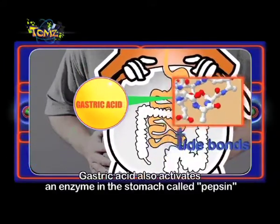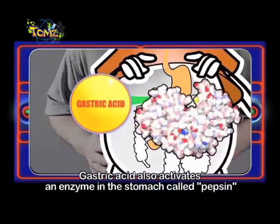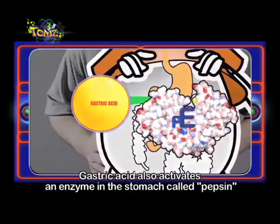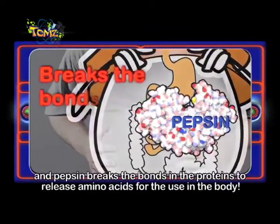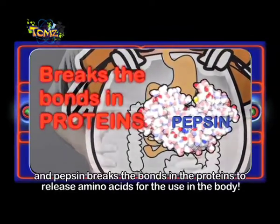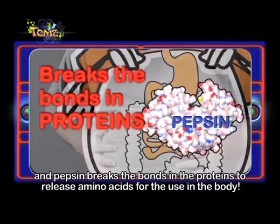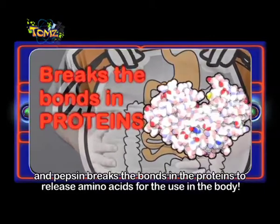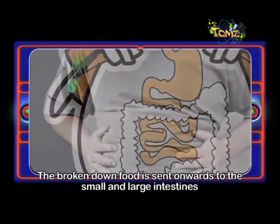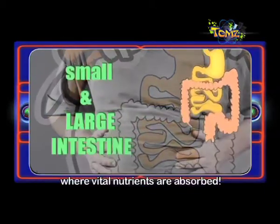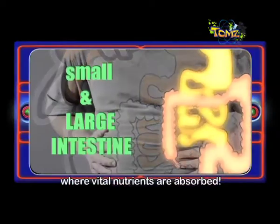Gastric acid also activates an enzyme in the stomach called pepsin, and pepsin breaks the bonds in the proteins to release amino acids for use in the body. The broken down food is sent onwards to the small and large intestine where vital nutrients are absorbed.